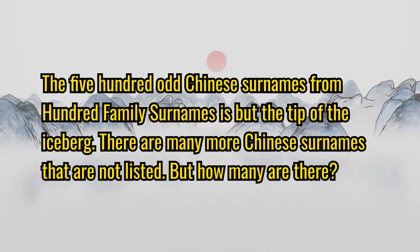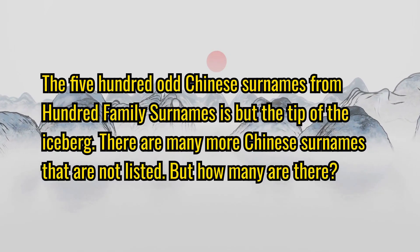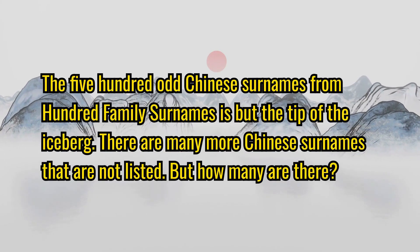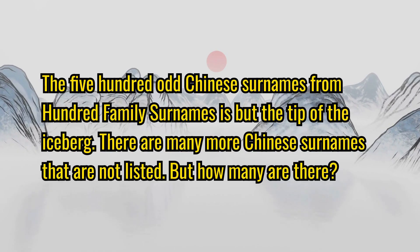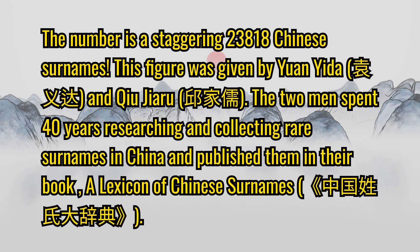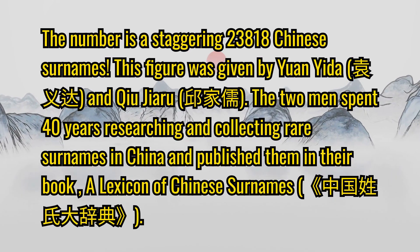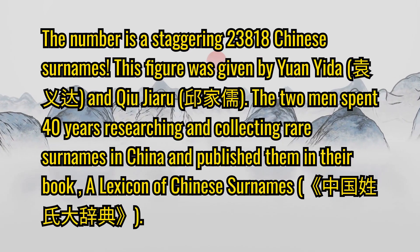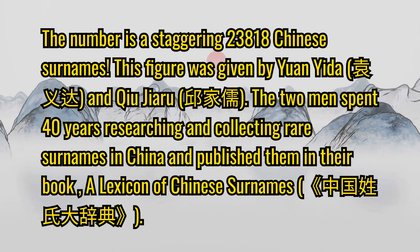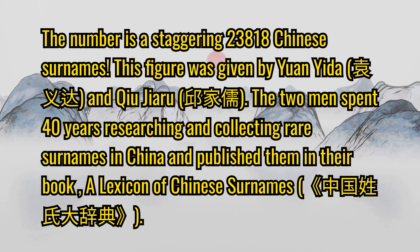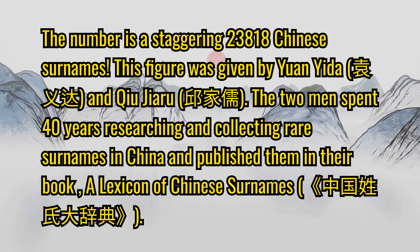The 500-odd Chinese surnames from the Hundred Family Surnames is but the tip of the iceberg — there are many more Chinese surnames not listed. The actual number is a staggering 23,818 Chinese surnames, a figure given by Yuan Yida and Qiu Jiaru, who spent 40 years researching and collecting rare surnames in China, publishing them in their book, A Lexicon of Chinese Surnames.